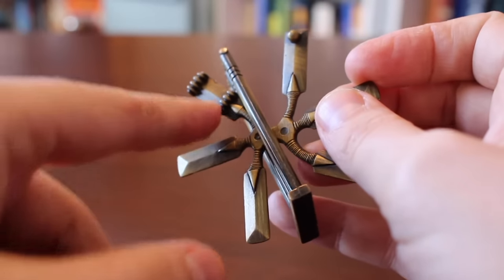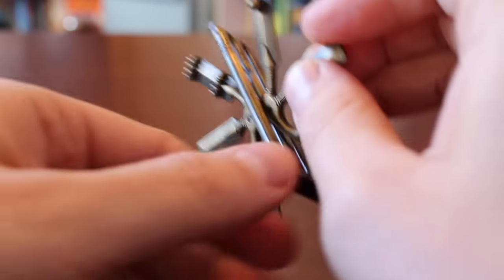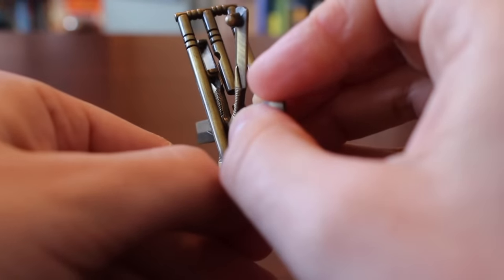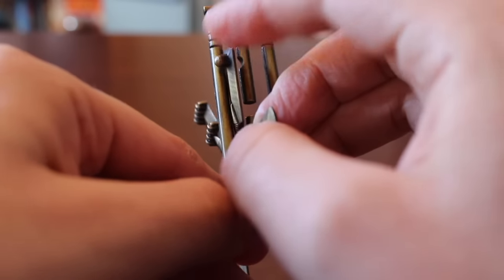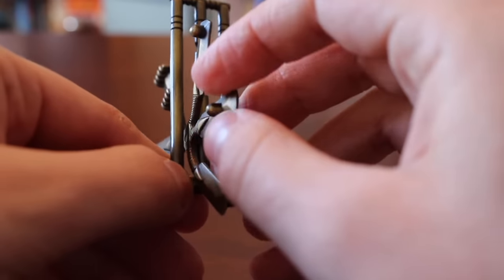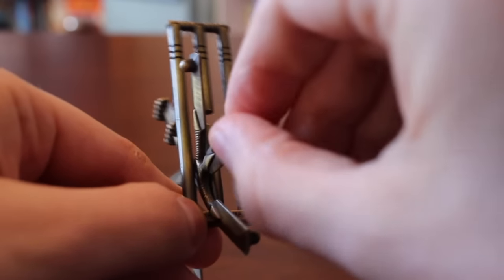Now we still have a problem. This ribbed section here is going to block any attempt to take this off this way, and the stud will block any attempt to take it off the other way. As a result, we need to turn the propeller around.